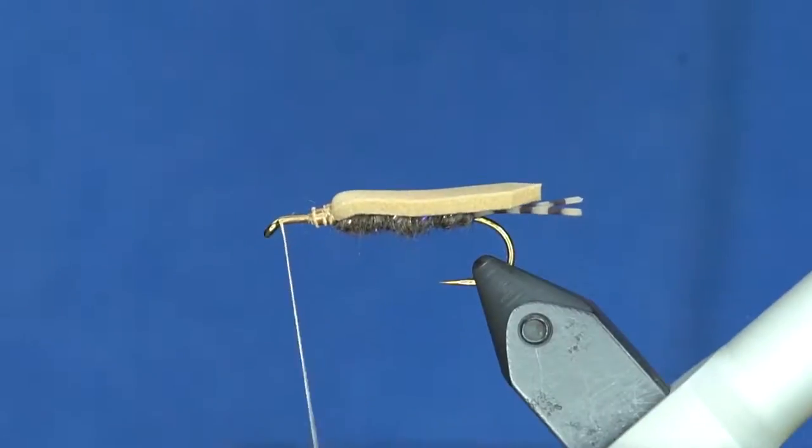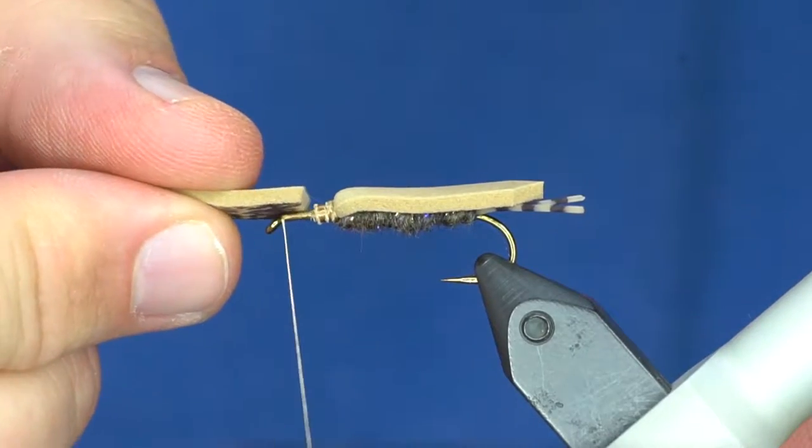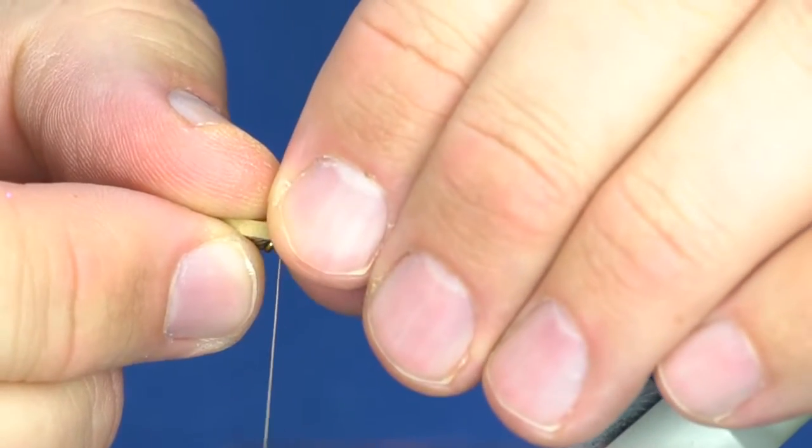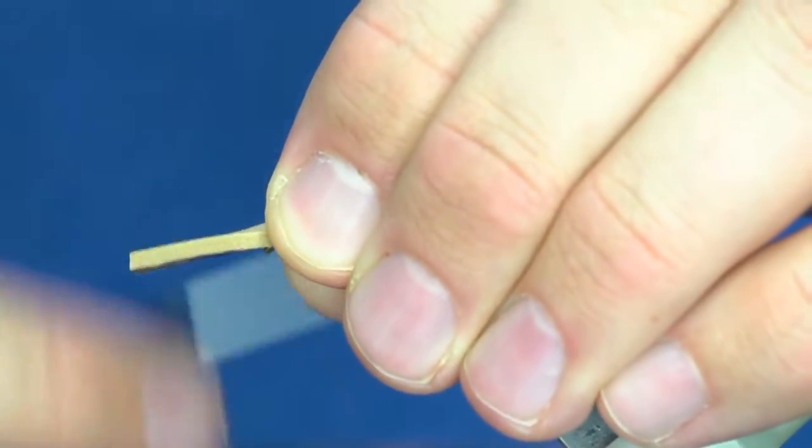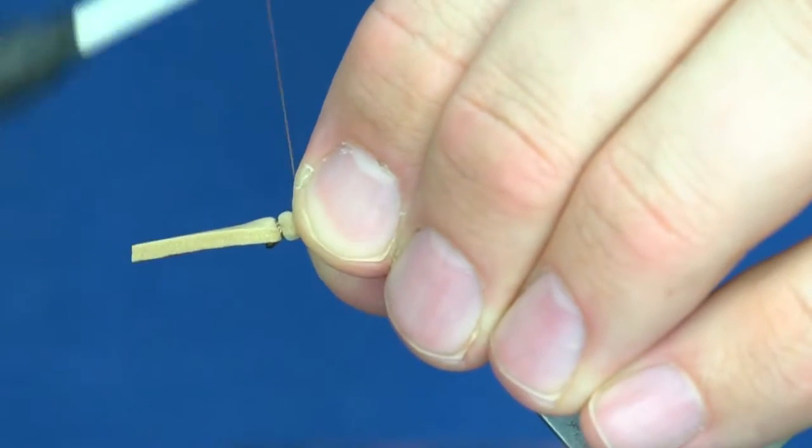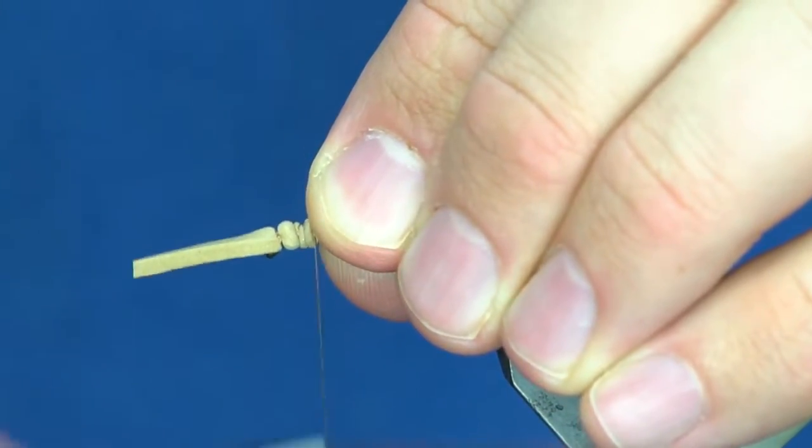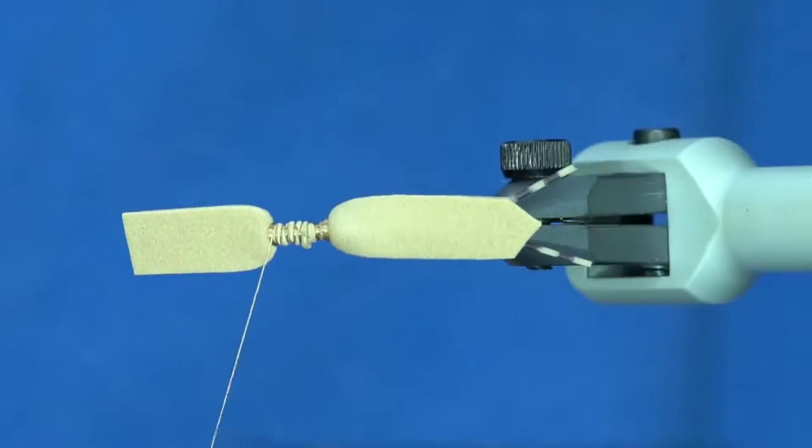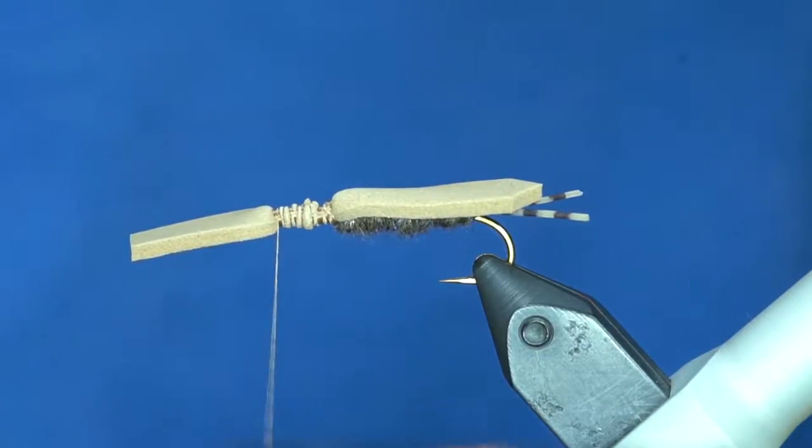To do that, I'm going to advance my thread all the way to the edge of the eye. I'm going to put this piece of foam right budding up to this other piece that I've tied down. Pinch it in place and give it several wraps, and then wrap back on top of itself just like that.